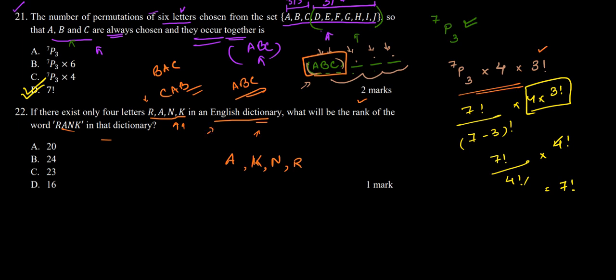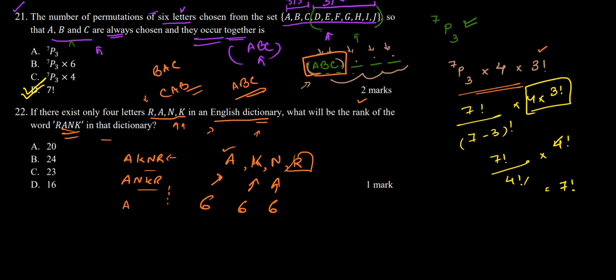Starting from A, the possible words are A, K, N, R then A, N, K, R and so on. With A fixed, we change the remaining 3 letters, which can be done in 3 factorial ways, which is 6. So words starting from A will be 6. Similarly there are 6 words starting from K, and 6 words starting from N. Coming to the word RANK which starts with R — before RANK there are 6 + 6 + 6 = 18 words.